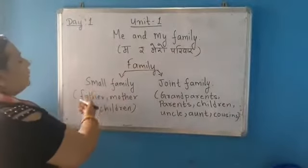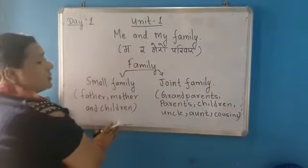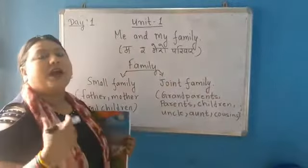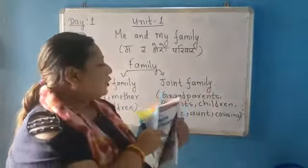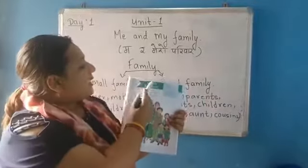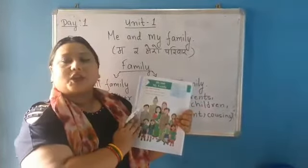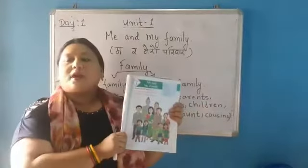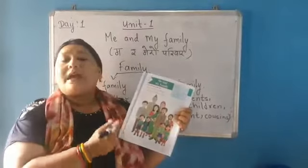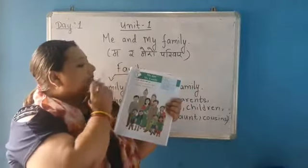So, family can be divided into two types: small family, where number of family members are less, and joint family, where the number of family members are more. So, in our Unit 1, you can see in your book on page number 1, Unit 1, Me and My Family — a picture is given in this chapter. Now, we have to look at this picture and discuss about it.